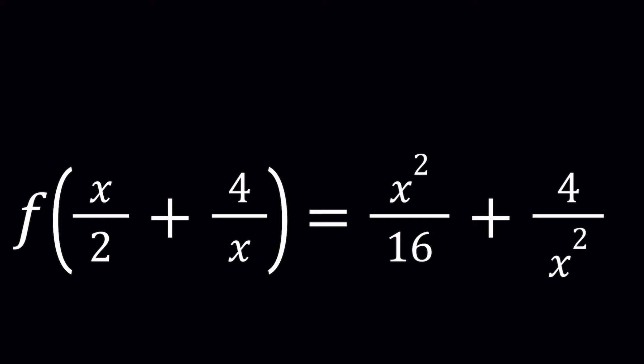We have f of x over 2 plus 4 over x equals x squared over 16 plus 4 over x squared. And we are going to solve for f. In other words, we're going to find an expression for f of x in terms of x.